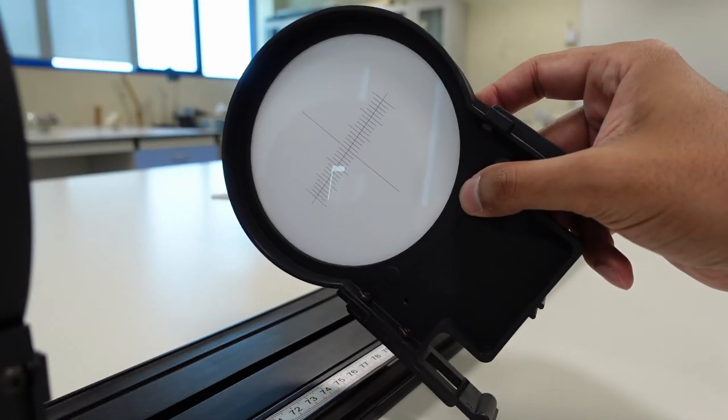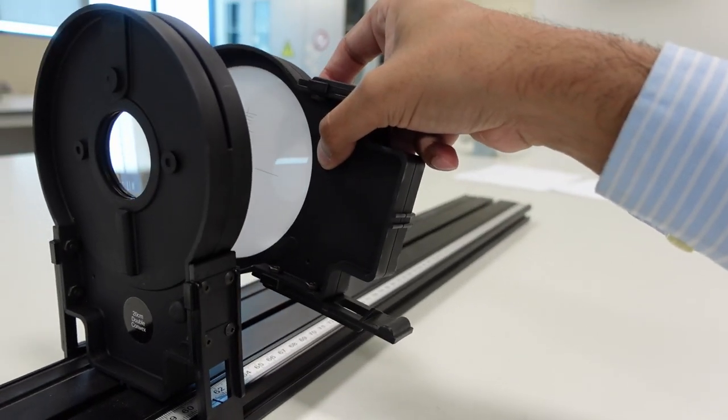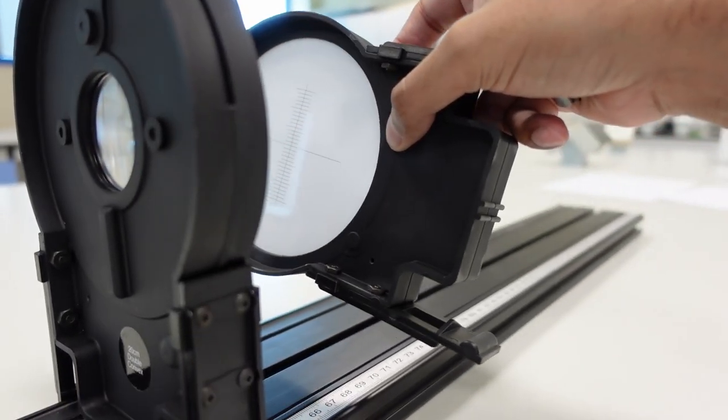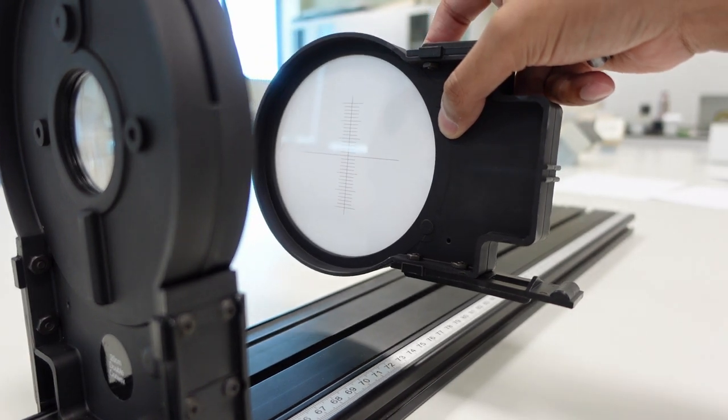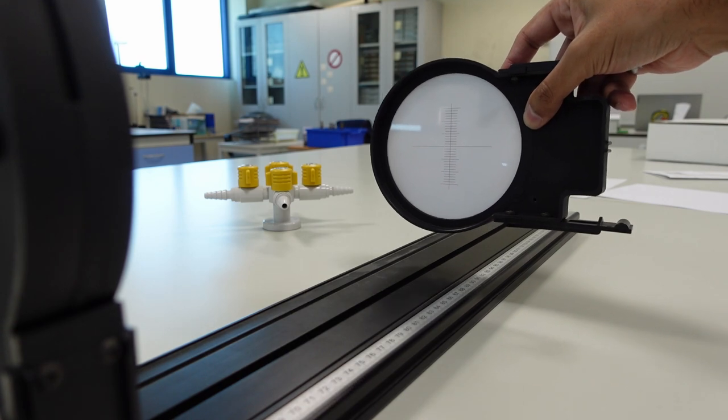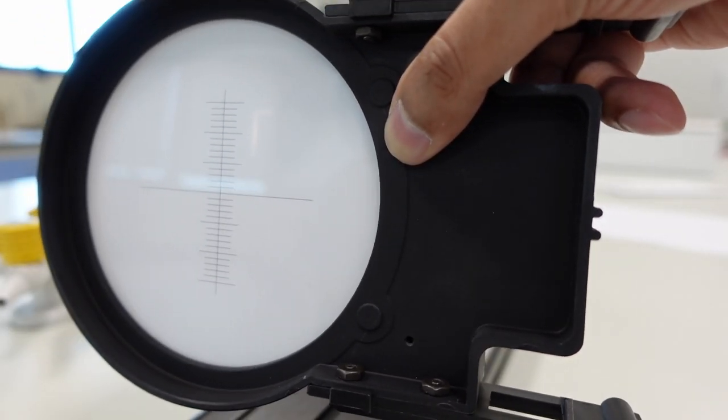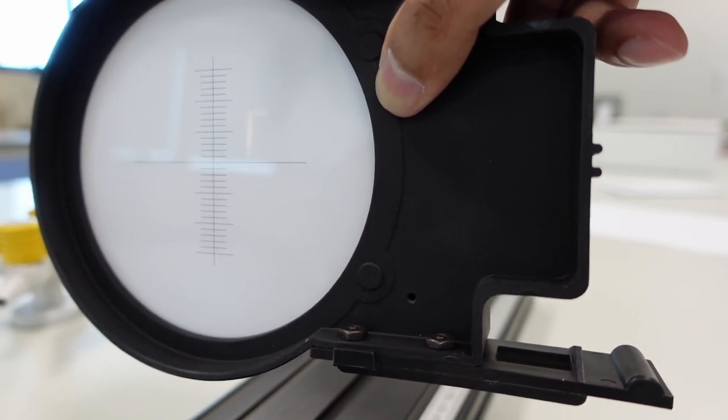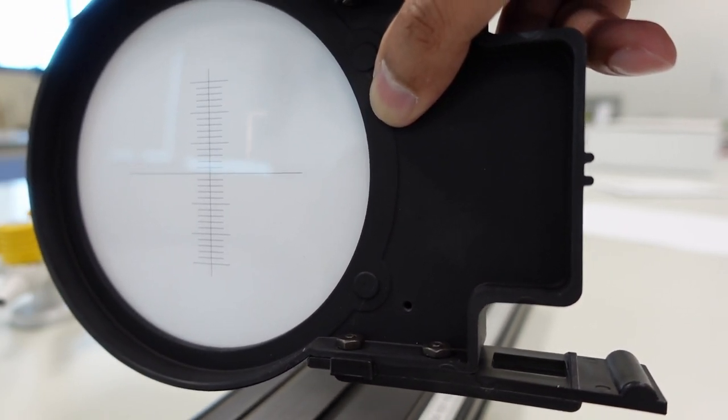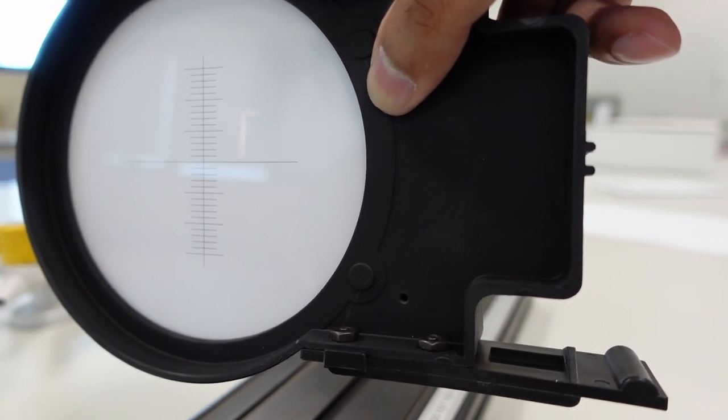And then we want a screen on the back. Next up is this screen. And what you want to do with the screen is you want to move it fairly close to the actual lens. And then slowly move it backwards until you get a sharp image of that letter. Can you see right there?